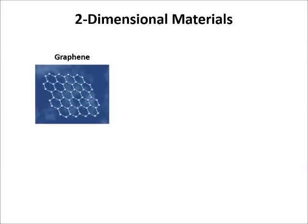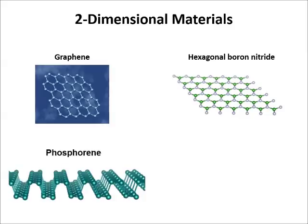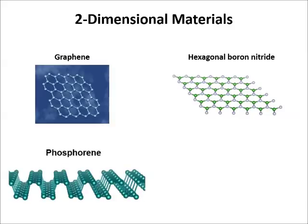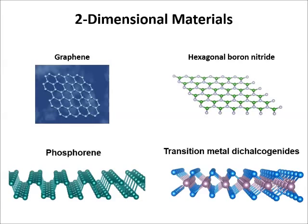Recent development of novel two-dimensional materials provides the opportunity for the ultimate thin-channel device concepts. 2D materials include metallic graphene, insulating hexagonal boron nitride, semiconducting black phosphorus, and as well as transition metal dichalcogenides.